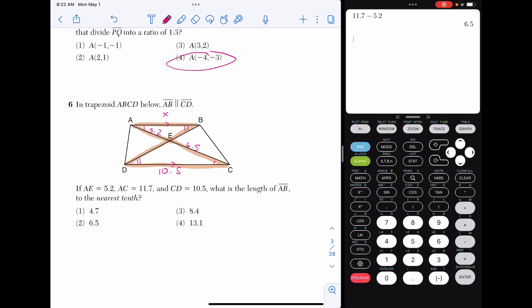This means that we can set up a proportion to solve. So 5.2 corresponds to the 6.5 and X corresponds to 10.5. Let's cross multiply. 6.5 times X is 6.5X. 5.2 times 10.5 gives me 54.6. We're going to divide by 6.5 on both sides and I get X is 8.4. Let's say you saw this question and you had no idea what to do. I would look at your answer choices and see if there's anything you can eliminate. AB definitely looks smaller than DC. So I would have said choice 4 is not a good option.